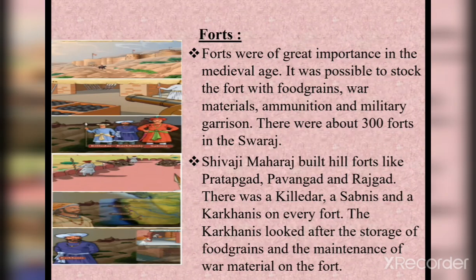Forts were of great importance in the medieval age. It was possible to stock a fort with food grains, war material, ammunition, and a military garrison. There were about 300 forts in the Swaraj. Possession of a fort made it possible to keep an eye on the surrounding area. In the case of foreign invasion, it was possible to protect people taking shelter in the fort. Ammunition means bullets, bombs, guns and other war materials. Military garrison means soldiers stationed in that place to defend it.